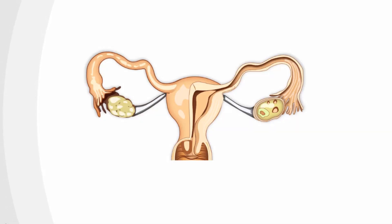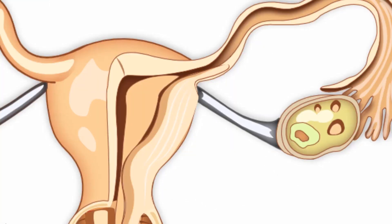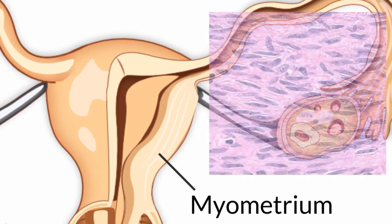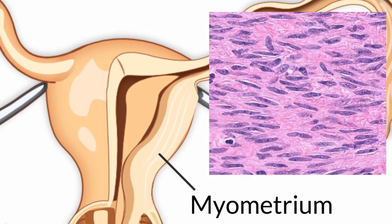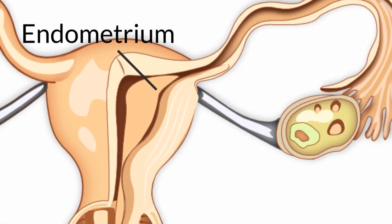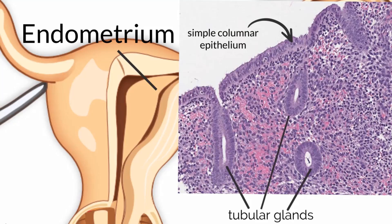To answer her question, let's take a closer look at the uterus and endometrium. The uterus is a muscular and glandular organ. The myometrium is a highly vascular muscular layer, composed of bundles of smooth muscle and interwoven layers responsible for uterine contractions. It surrounds the endometrium, the inner glandular layer. The endometrium is composed of simple columnar epithelium with simple tubular glands.